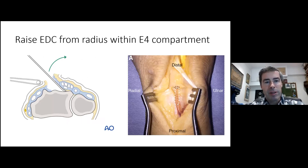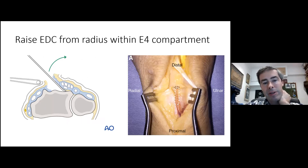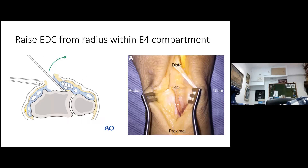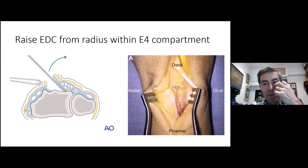The next move for all approaches is to raise the extensor digitorum communis from the radius and take it ulnar, using periosteal elevation and sharp dissection to take the whole compartment off. With EPL you can preserve the compartment floor, but with the fourth compartment you want to preserve the floor as best as possible to reduce the chance of tendon adhesions to underlying bone. Subfascial dissection is preferred, and the hardest part is dissecting the fourth compartment off the dorsal capsule because there is no clear plane. You need to preserve the dorsal ligaments, which run more or less transversely at the proximal part, across to the triquetrum — not going too deep, but also not too superficial, which would leave exposed tendons that can adhere to the capsulotomy subsequently.